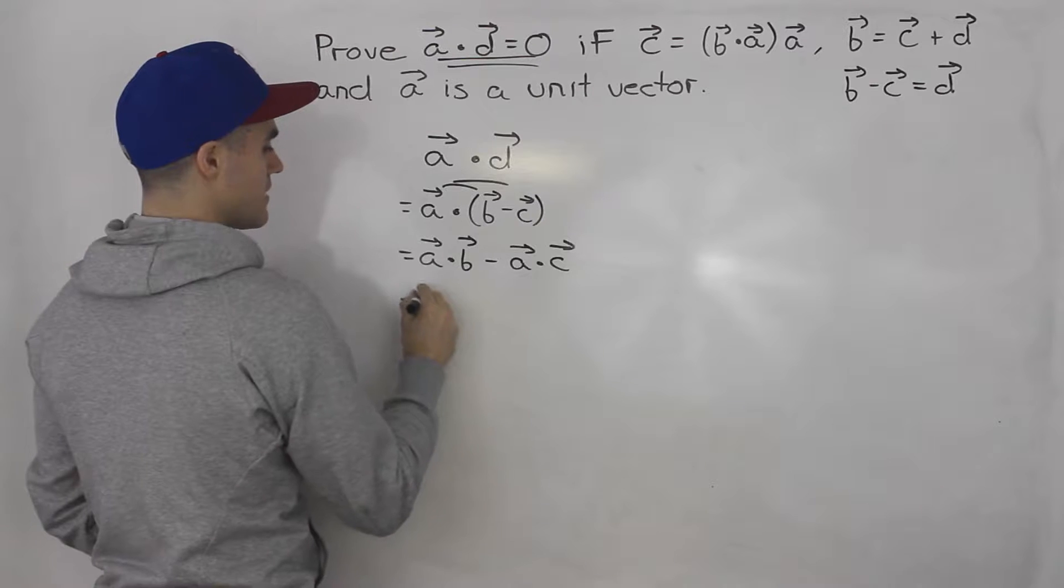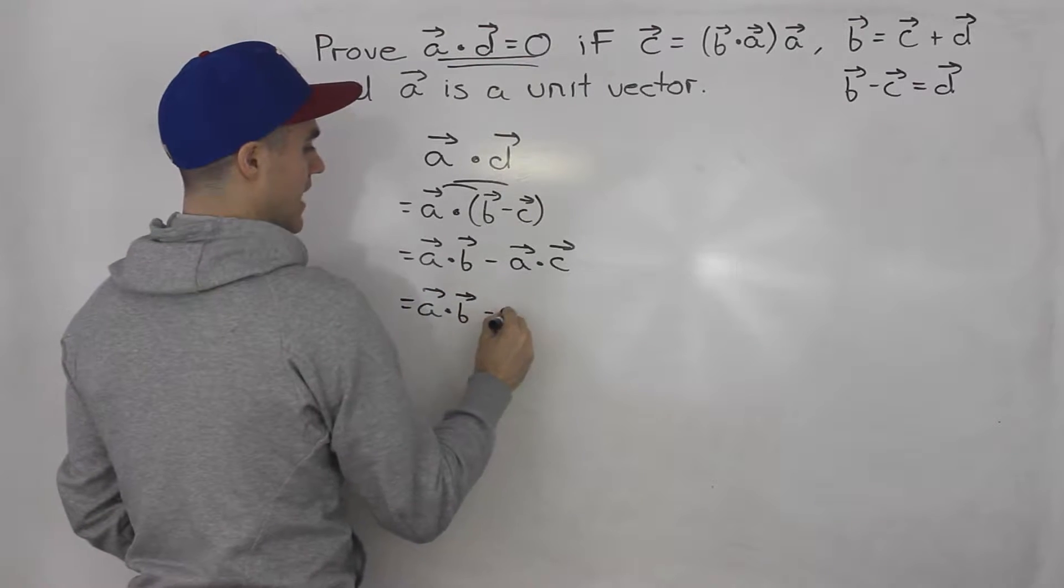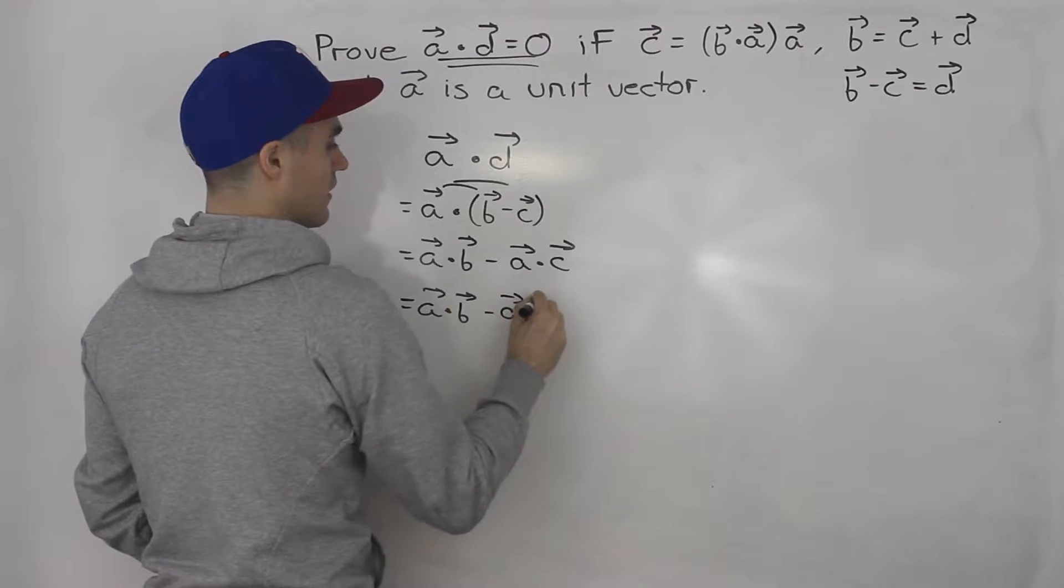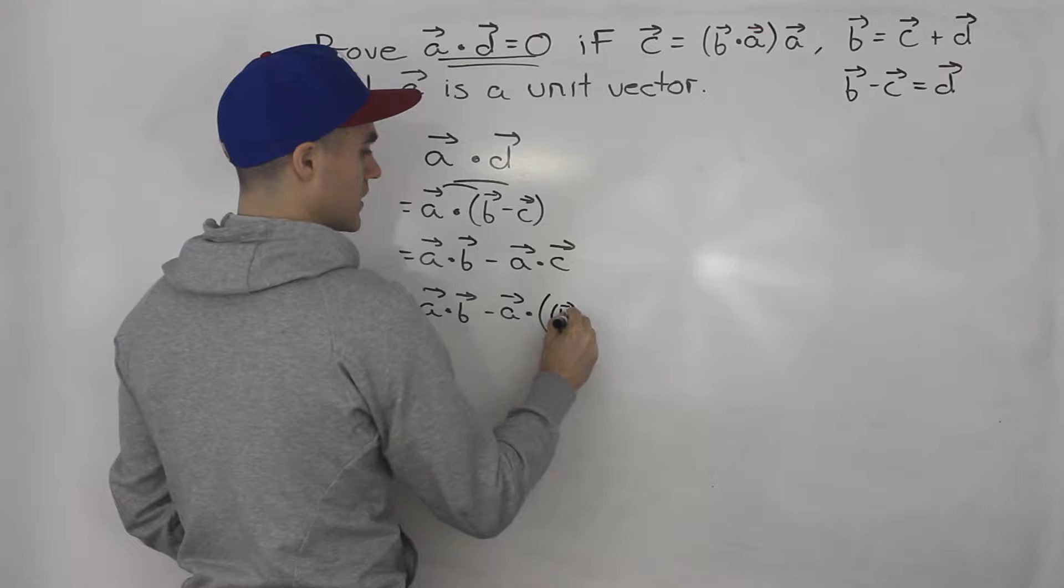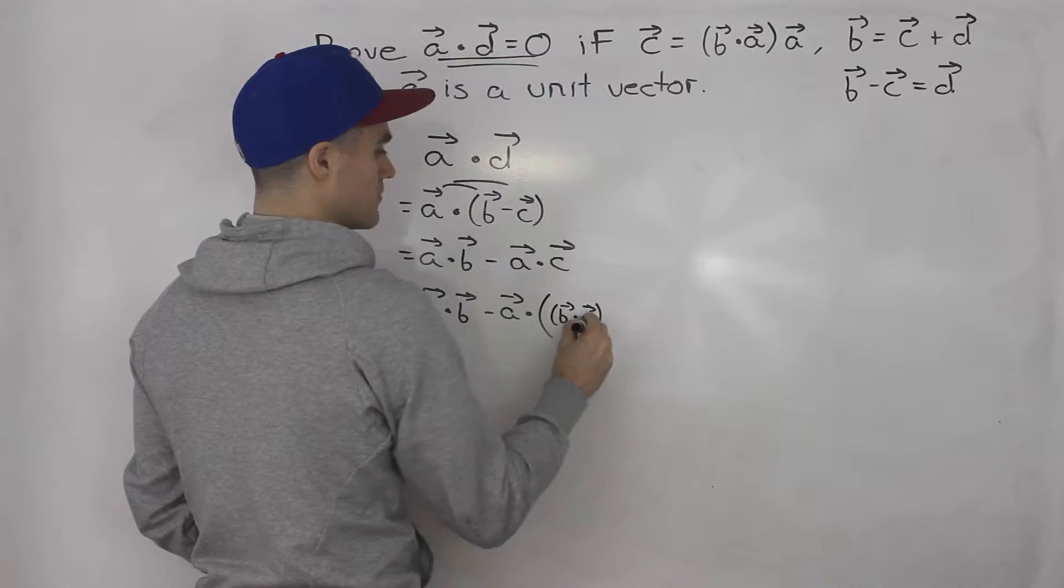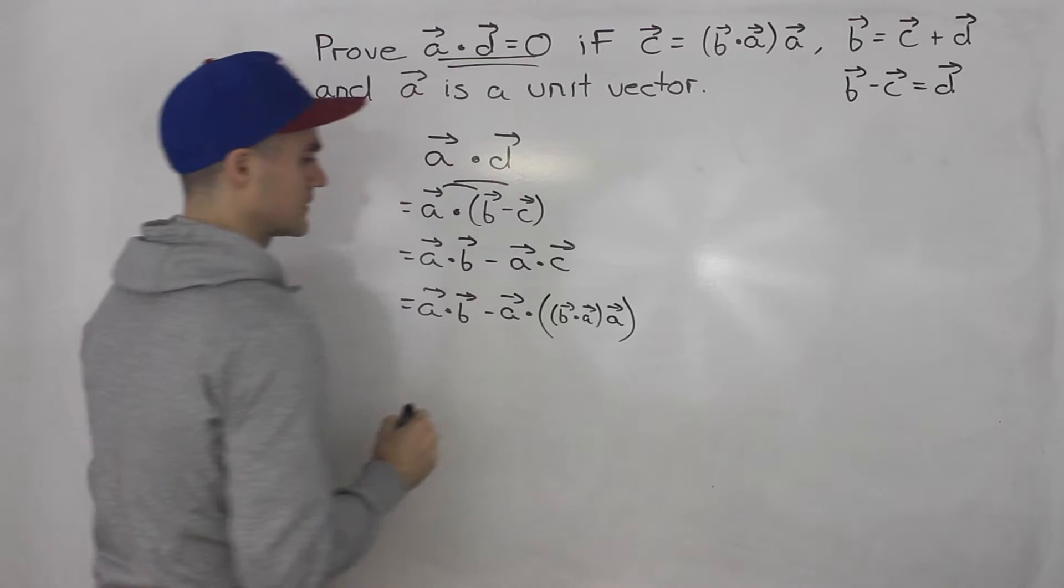So we'd have a dot vector b minus a dot, and then in brackets, we got the dot product between a and b times vector a, like that.